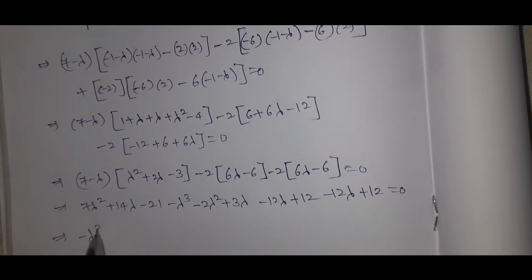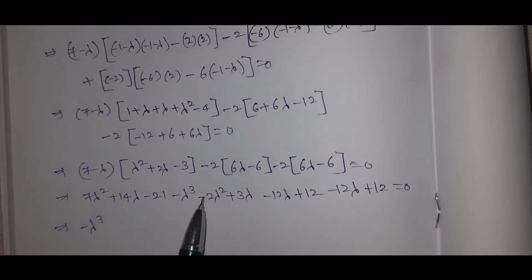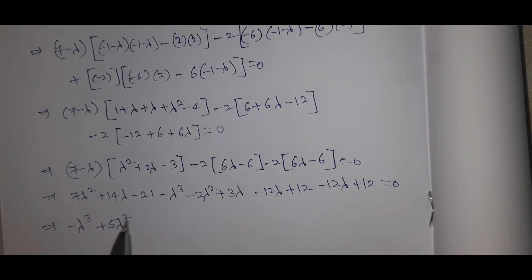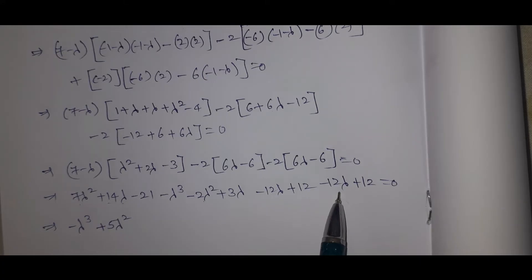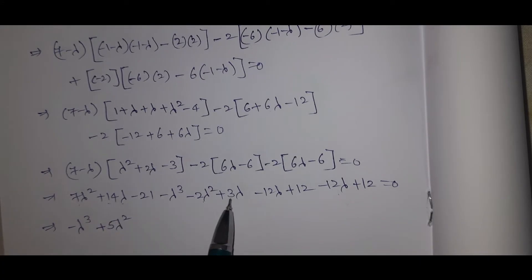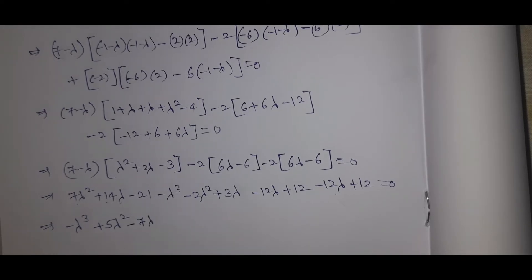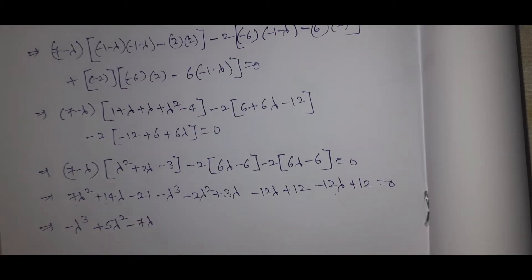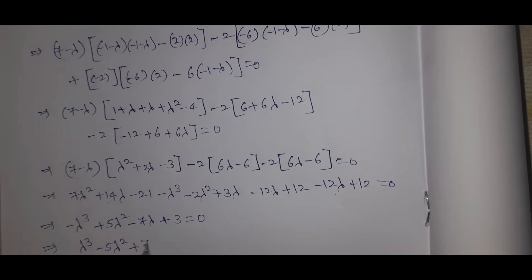So the characteristic equation is: lambda cubed minus 5 lambda squared plus 7 lambda minus 3 equals 0. This is the characteristic equation. Every square matrix satisfies its own characteristic equation. By the Cayley-Hamilton theorem, replacing lambda with matrix A: A cubed minus 5A squared plus 7A minus 3I equals 0.